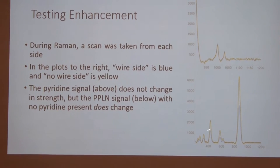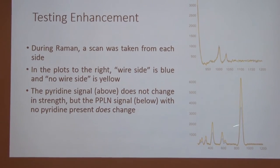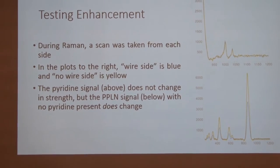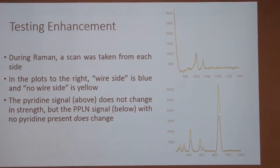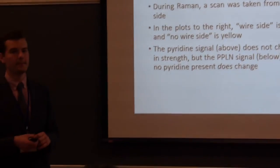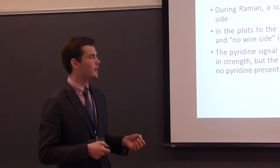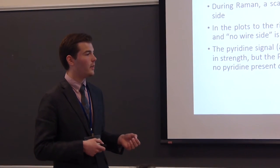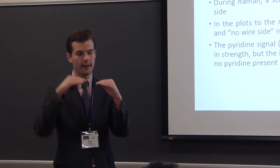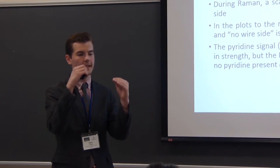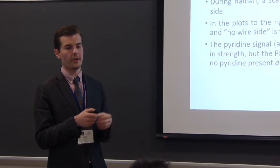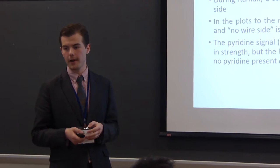Confusingly, if you only look at the lithium niobate, the thing that the wires sit on, but you don't actually put pyridine on the sample, those signals do change. But we don't think that's enhancement because, one, that shift in intensity is actually too small. It's more like what you would get if the sample wasn't perfectly flat and we're actually changing our focus a little bit as we move across. And secondly, it's shifting in the wrong direction. It actually gets stronger when we move over the half that doesn't have any wires on it.